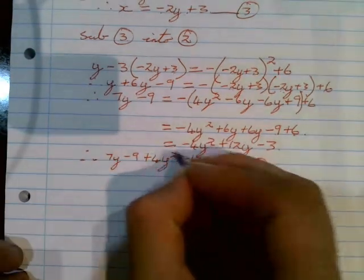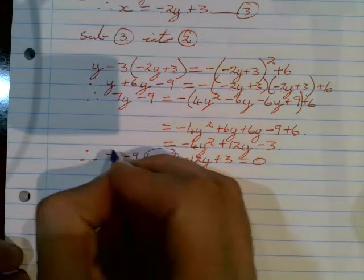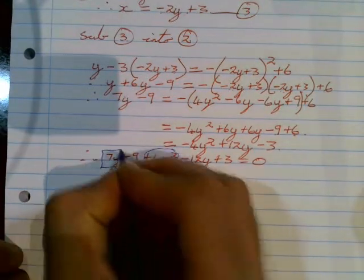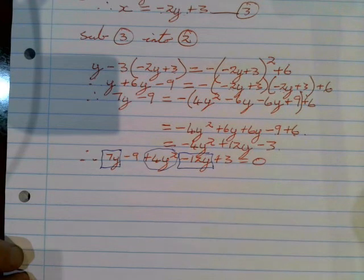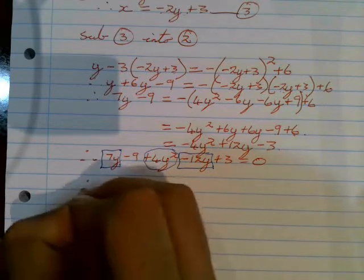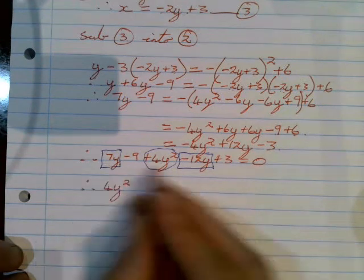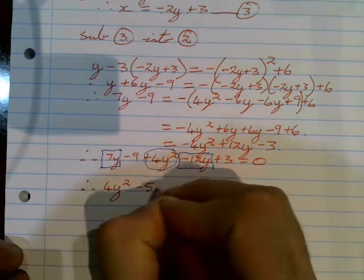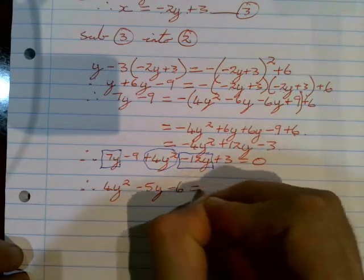The 4y squared is on its own so we put a circle around it. Then 7y and minus 12y get a rectangle around them as like terms, and then the two constants. So 4y squared remains, 7y minus 12y gives us minus 5y, and minus 9 plus 3 gives us minus 6, all equal to zero.